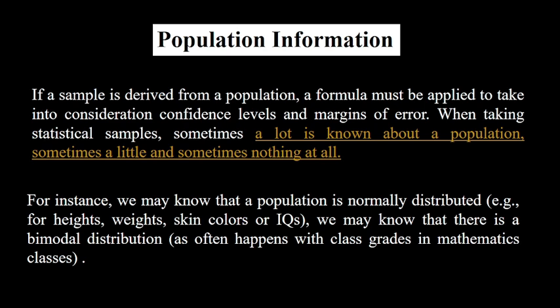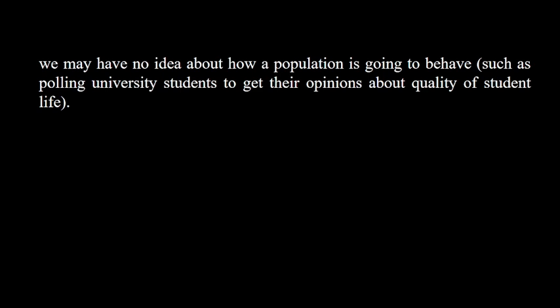For instance, we may know that a population is normally distributed — for example, heights, weights, skin colors, or IQs. We may know that there is a bimodal distribution, as often happens with class grades in mathematics classes. We may have no idea about how a population is going to behave, such as polling university students to get their opinions about quality of student life.